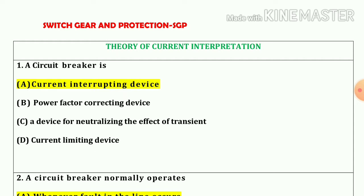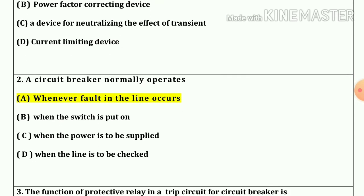Question number 1. A circuit breaker is a current interrupting device. Question number 2. A circuit breaker normally operates whenever fault into the line occurs.